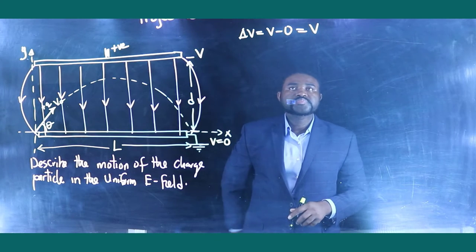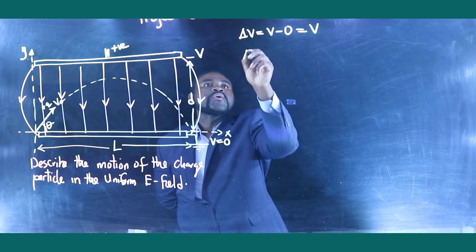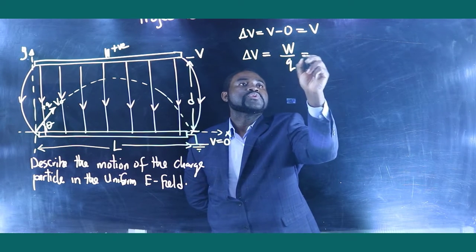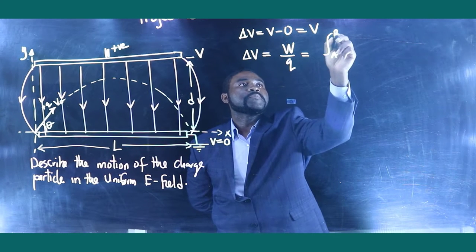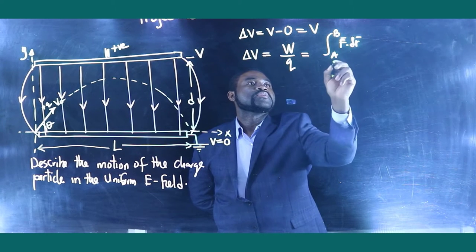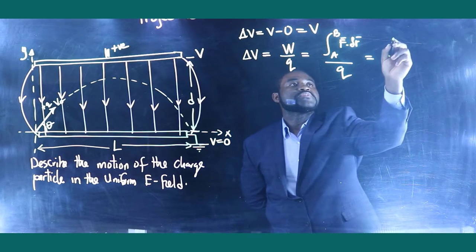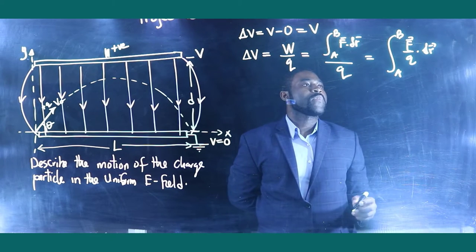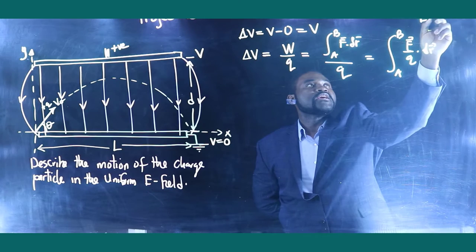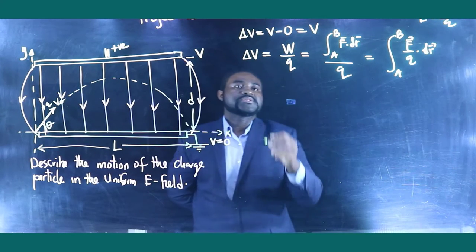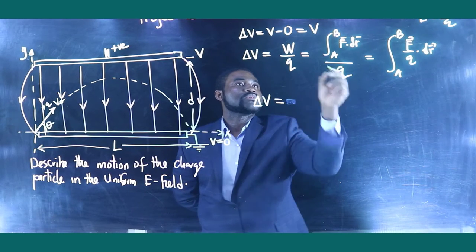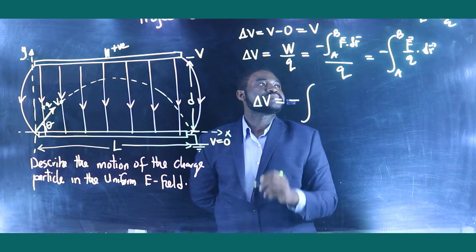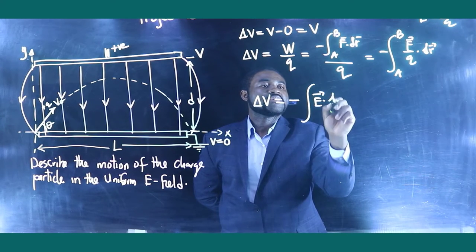But what do we know? We know that the potential difference V is equal to the work done per unit charge, which is equal to the integral from A to B of F dot dr divided by Q. This equals the integral from A to B of F divided by Q dot dr. But the electric field E is equal to the force per unit charge, so the potential difference will be equal to negative the integral of E dot dr.